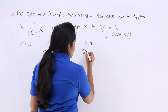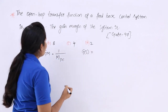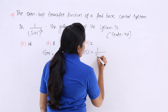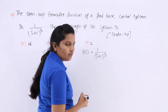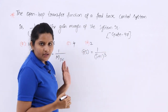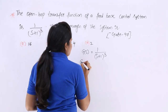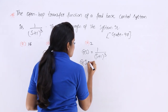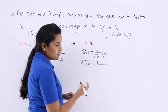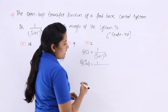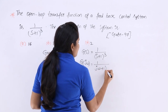We have the open loop transfer function G(s) = 1 by (s+1) whole cube. Whenever you are taking the Nyquist plot, you need to consider G(jω) — that means, in the frequency domain, we convert from the s-domain to the ω-domain. So G(jω) = 1 by (jω+1) whole cube.